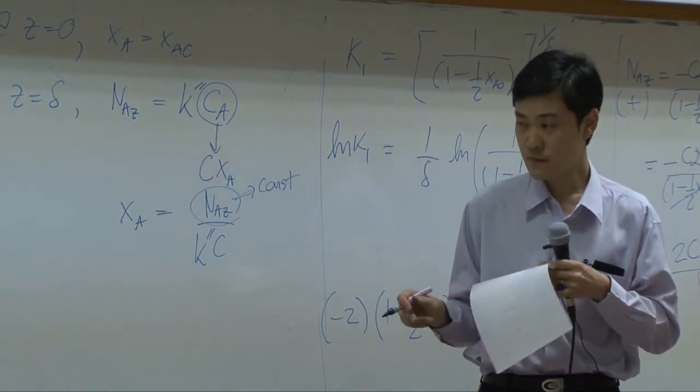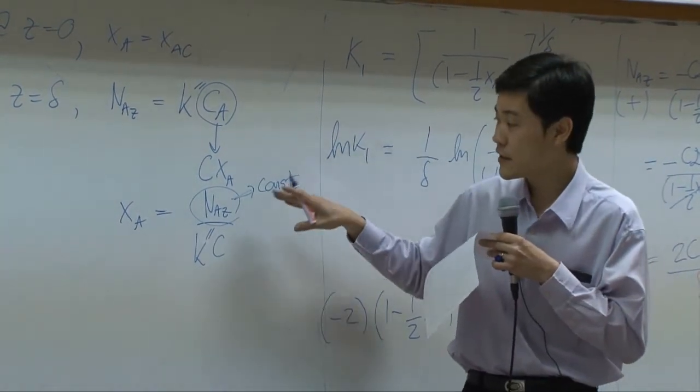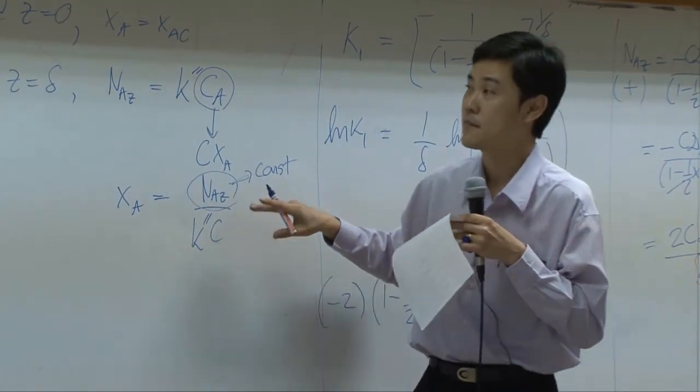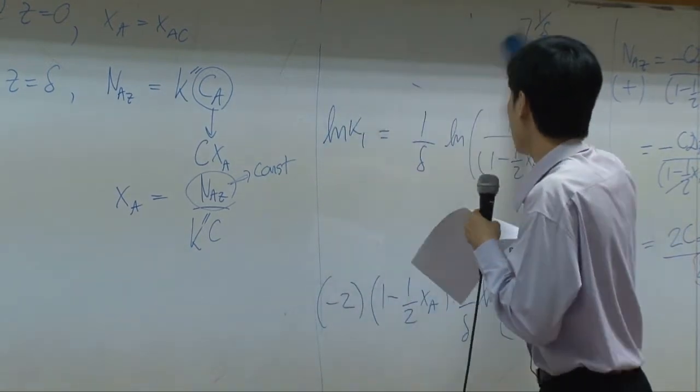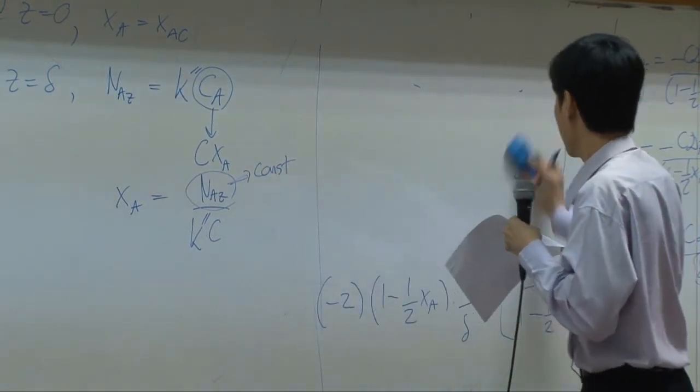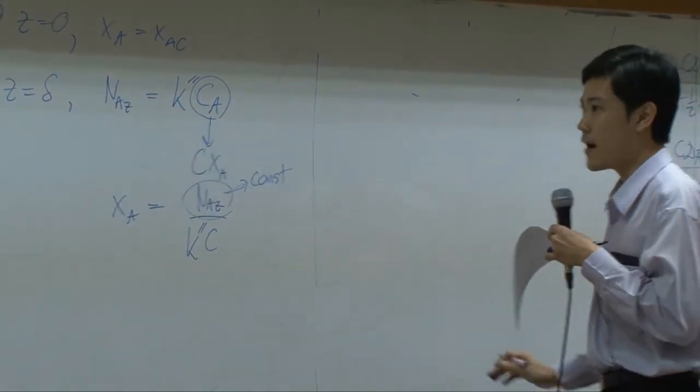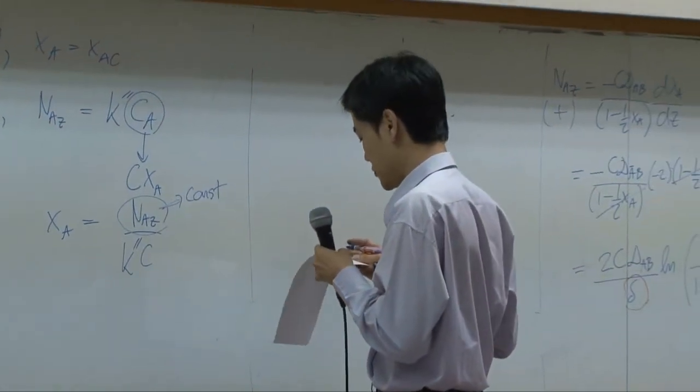Again, you still have one variable which is n_az, so you still need another boundary. The third boundary is that you can use...